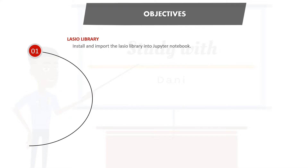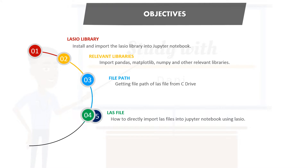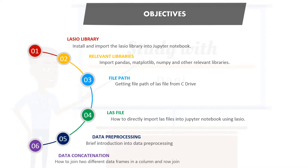The objectives for today's video are to install and import the lasio library into Jupyter Notebook, and to import pandas, matplotlib, numpy and other relevant libraries. We will also learn how to get your file path from your C drive or desktop. We'll learn how to directly import .las files into Jupyter Notebook using the lasio library, and get a brief introduction to data pre-processing including how to visualize missing data and how to join two different data frames in a column or row join.